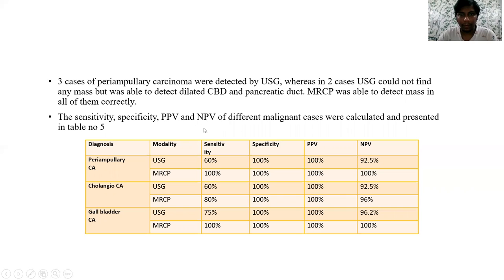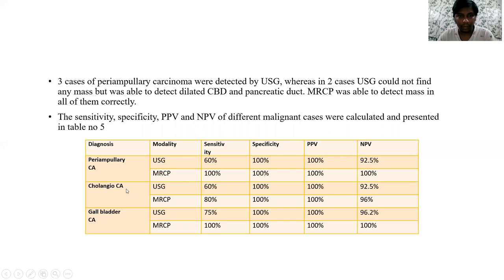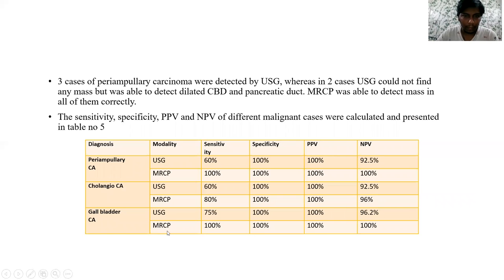The sensitivity, specificity, PPV, and NPV of different malignant cases were calculated. In periampullary carcinoma, the sensitivity, specificity, PPV, and NPV of USG were 60%, 100%, 100%, and 92.5%. For MRCP, all were 100% as MRCP detected all 5 cases accurately. In cholangiocarcinoma, USG had sensitivity 60%, specificity 100%, PPV 100%, and NPV 92.5%. For MRCP: sensitivity 80%, specificity 100%, PPV 100%, and NPV 96%. For gallbladder carcinoma, USG had sensitivity 75%, specificity 100%, PPV 100%, and NPV 96.2%, while MRCP was 100% across all parameters.